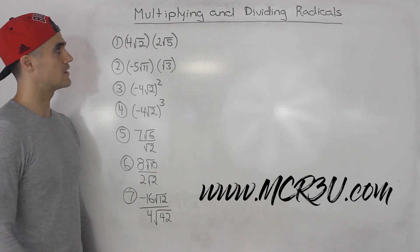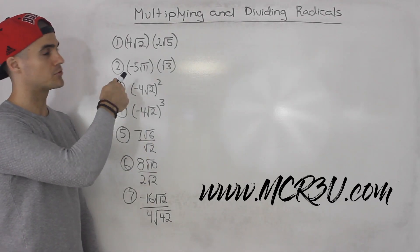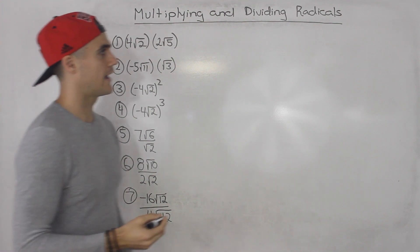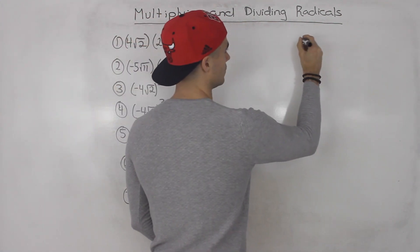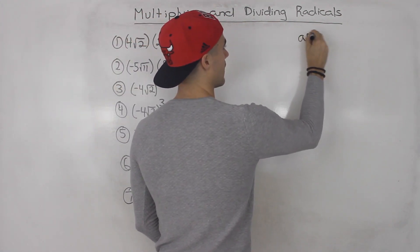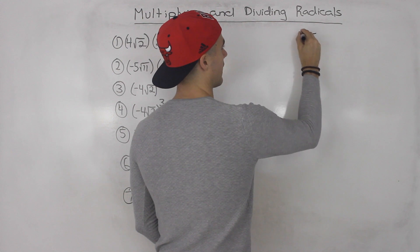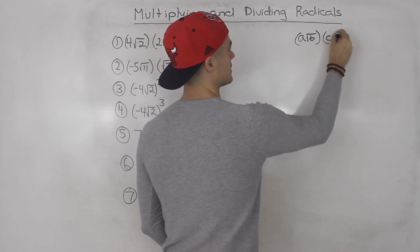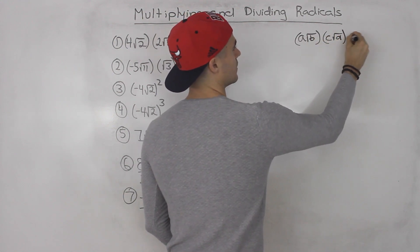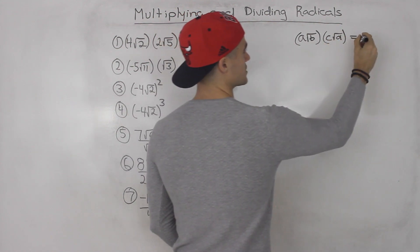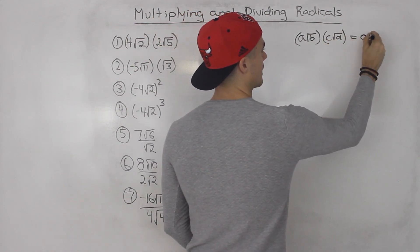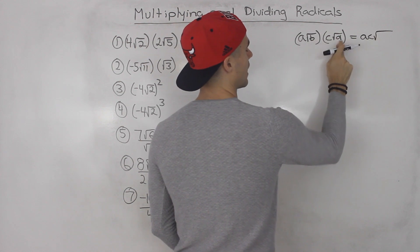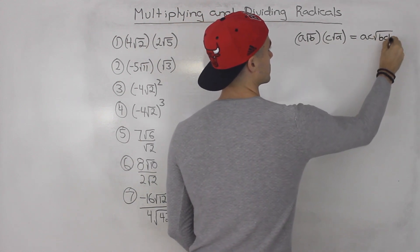Welcome back. Moving on to the next video, we're now going to be multiplying and dividing radicals. In general, the rule is: if you have a√b times c√d, what happens is you multiply the coefficients in front — so we'd have a times c — and then you also multiply the radicals.